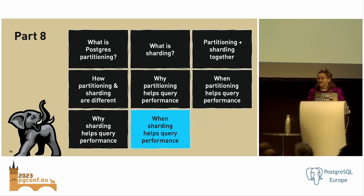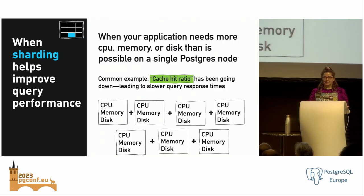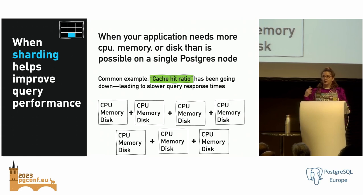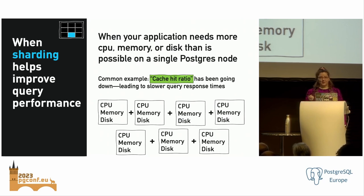When does sharding help improve query performance? From a hardware perspective, if your queries are slowing down because your cache hit ratio has been reduced, increasing the amount of memory available to keep data in memory will improve your cache hit ratio and will therefore, in a lot of cases, help improve query performance.